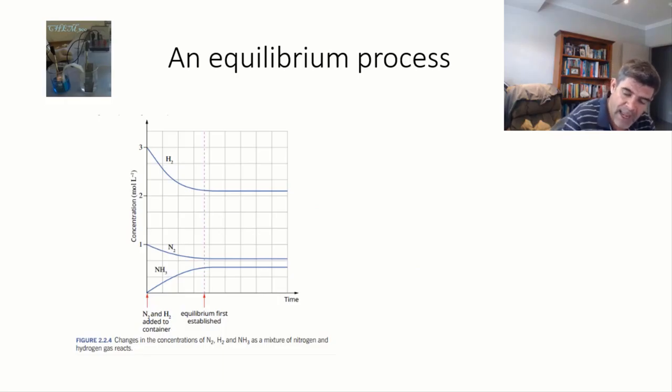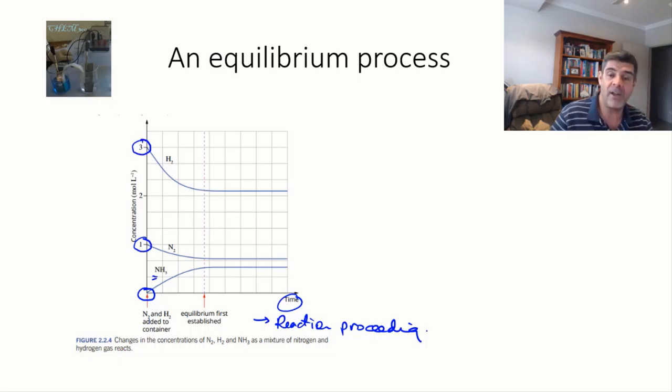Because when we look at this in terms of the time, so the reaction proceeding, we can see what's going on here. So initially, we have no ammonia in this case. We have one mole per liter of nitrogen and three moles per liter of hydrogen.